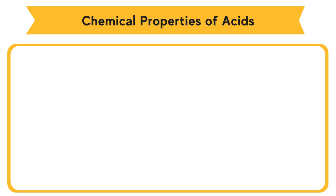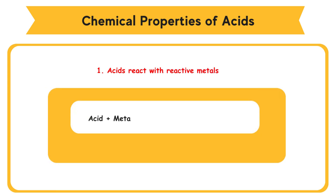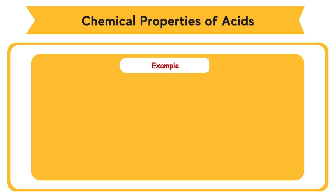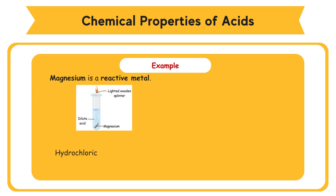Chemical Properties of Acids. 1. Acids React with Reactive Metals. An acid reacts with a reactive metal to produce a salt and hydrogen gas. Note that copper and silver do not react with dilute acids. Example: Magnesium is a reactive metal. Hydrochloric Acid, 2HCl, reacts with Magnesium, Mg.